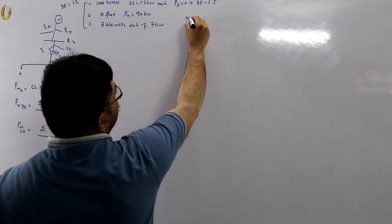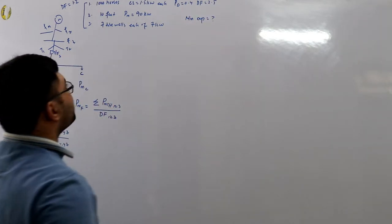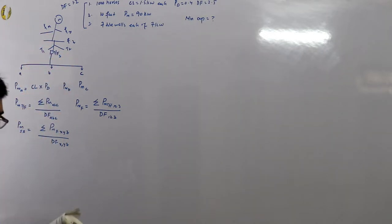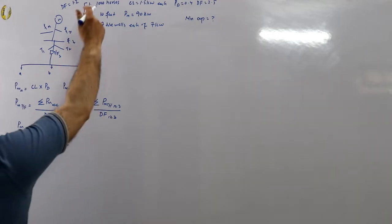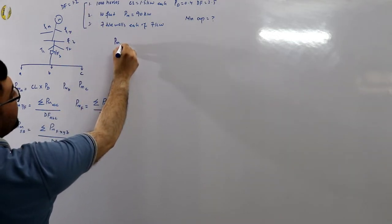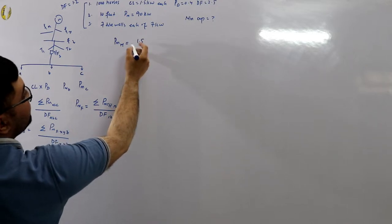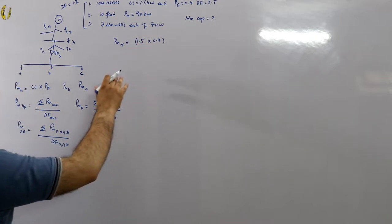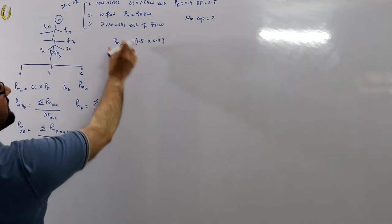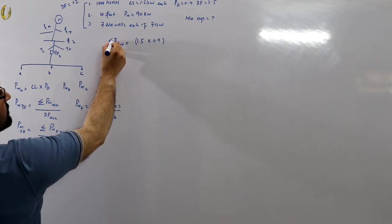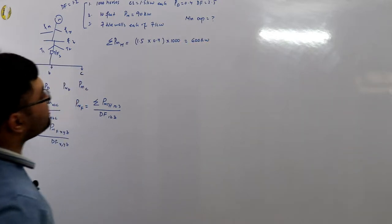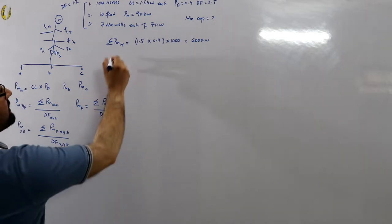We need the minimum capacity of the power station, which equals the maximum demand on the power station. First, find the maximum demand of the houses: 1.5 kilowatts connected load multiplied by the demand factor 0.4, then multiplied by 1000 houses. This gives 600 kilowatts as the summation of the maximum demands of the houses.